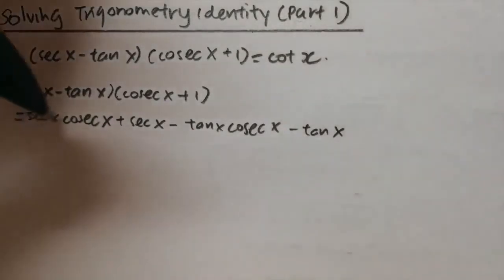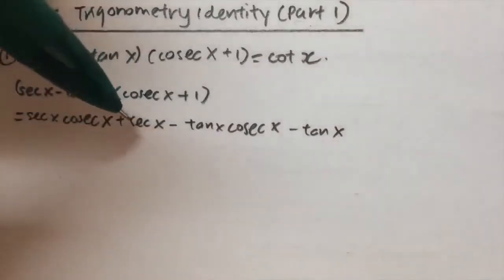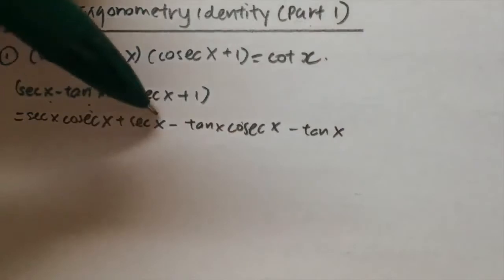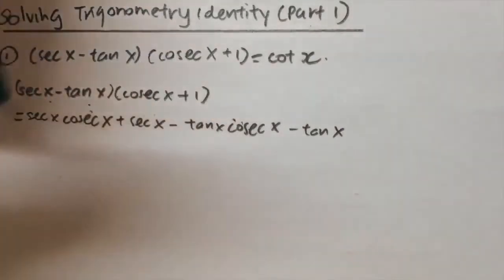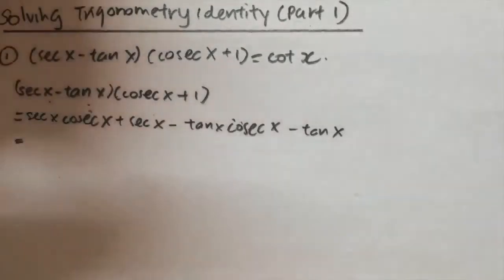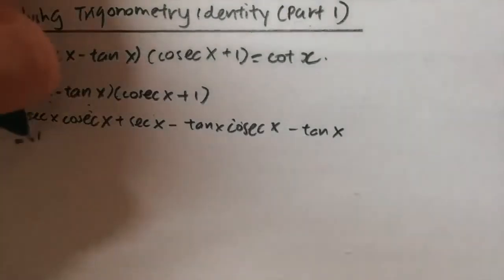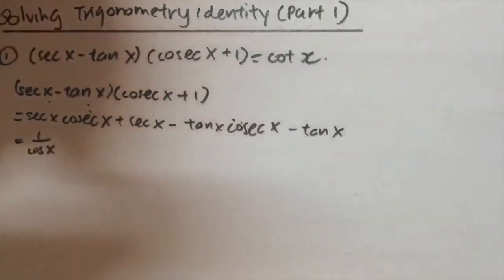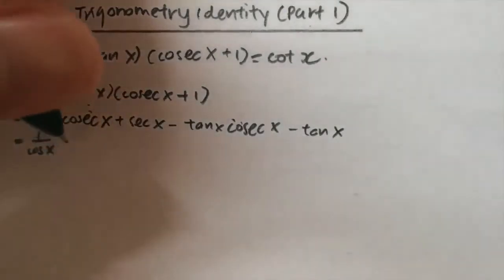Next, I will change all the sec and csc variables — converting sec x and csc x in terms of sine, cosine, and tangent — so it will be much easier to solve. So sec x equals 1 over cos x, and csc x equals 1 over sin x.